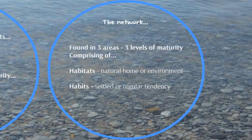In terms of what you end up populating — what's in your network — there are a couple of things. You've got your three areas and three levels of maturity that comprise habitats and habits. A habitat is our natural home or environment. A habit is a settled or regular tendency. So if you're going to have a culture of fantastic customer service, a habitat might be a training course where people go to learn and develop their customer service skills — or a model or theory that you pin your hopes to. The habit is how you put it into practice. They move around a lot more — they're a lot more dynamic. Some things are quite fixed and some things are quite fluid and dynamic.